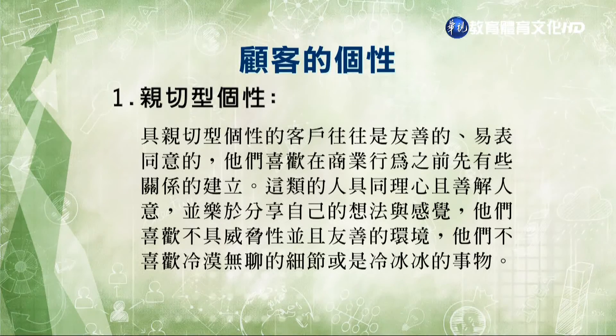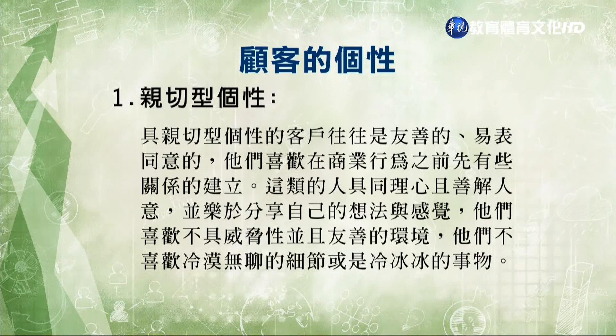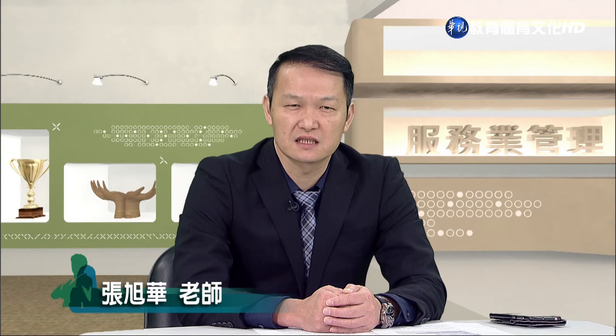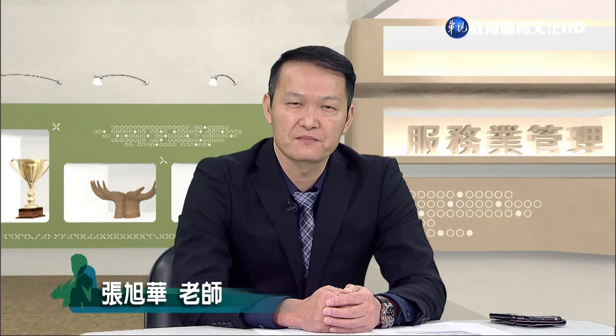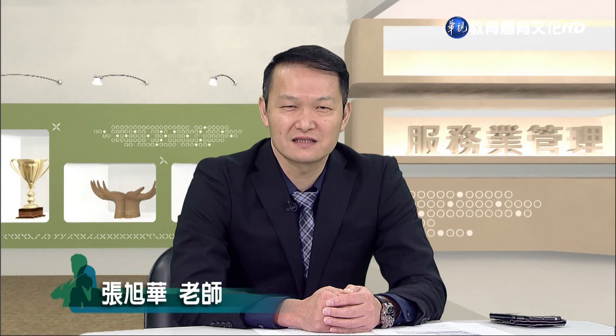親切型顧客喜歡在商業行為之前先有關係的建立，他們具同理心且善解人意，樂於分享自己的想法跟感覺。他們喜歡不具威脅性且友善的環境，不喜歡冷冰冰或無聊的細節環境。這類顧客通常很快就形成購買決策，其特質是具有外向性還有社交性。有些形容詞可以描述這類顧客，像和藹可親、耐心、有忠誠、同情心、體恤、信任、平靜等等。